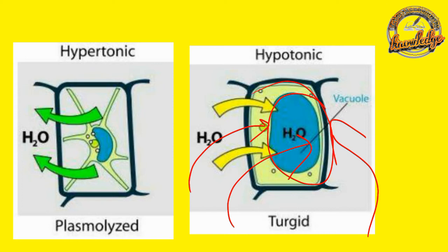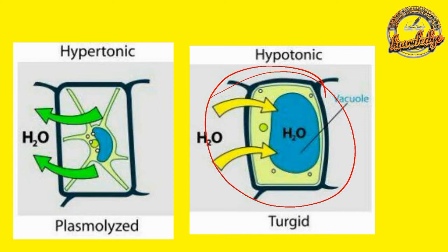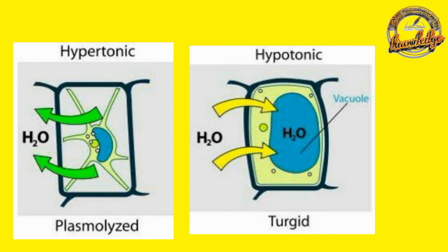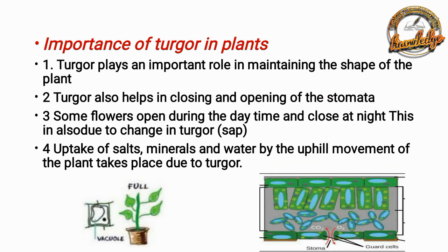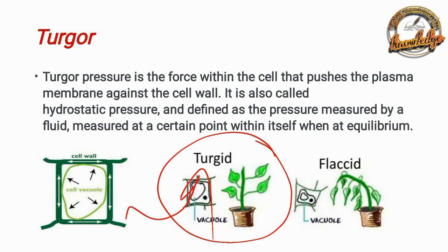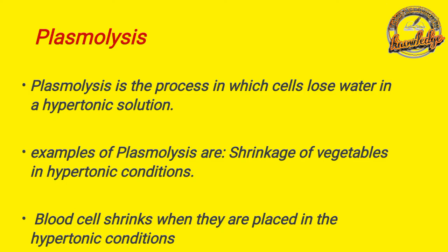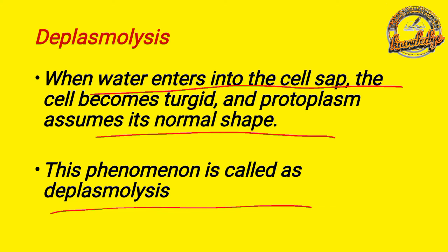The cell becomes turgid, and this process is called D-plasmolysis. Water enters into the cell, the cell becomes turgid — turgid means water has entered. There is D-plasmolysis, which is the reverse process of plasmolysis.